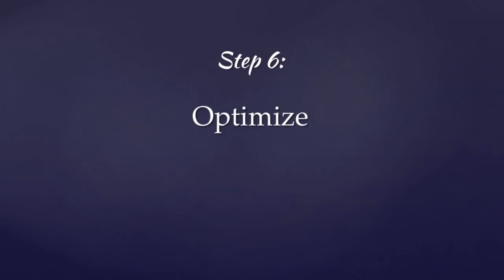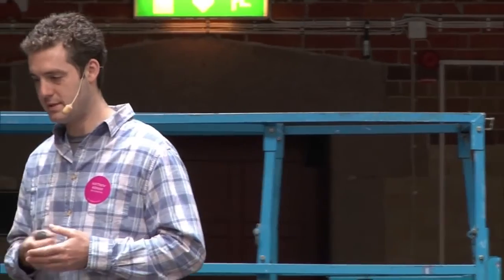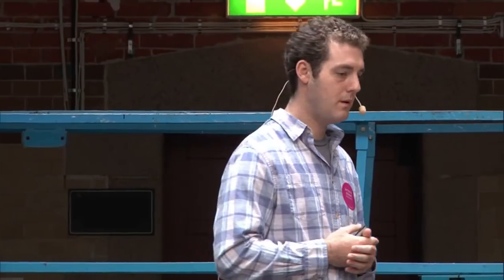Last step: optimize. The question to ask after running your advertising experiment is: do my ads have potential for success? That means you have a cost-per-acquisition target goal in mind — let's say it's 20 kronos. If after the experiment you found you acquired users for 80 kronos, even with optimization it will be very difficult to get that number down to 20. On the other hand, if you're at 25 and your goal is 20, with some optimization and split testing you can most likely hit your goal. If the answer is no, go back to step four, hypothesize another acquisition channel, and start over — you can do this very rapidly. If the answer is yes, we optimize.